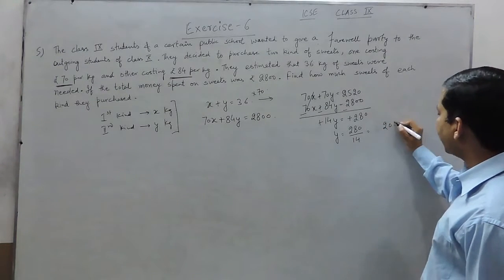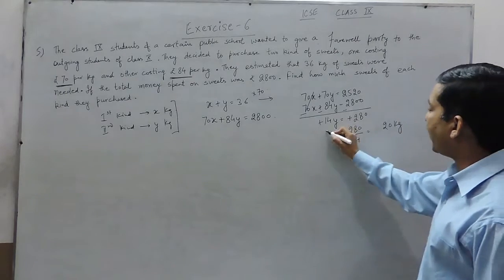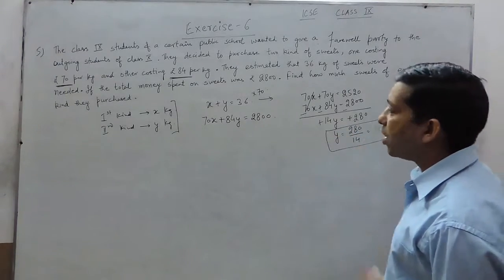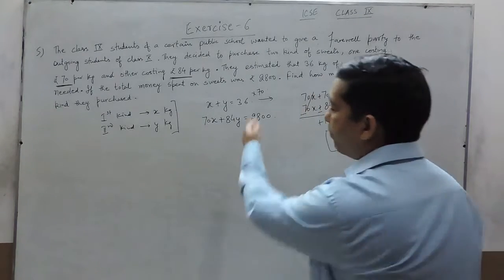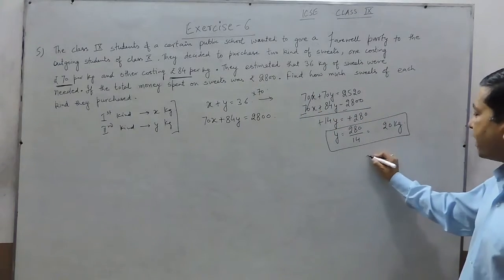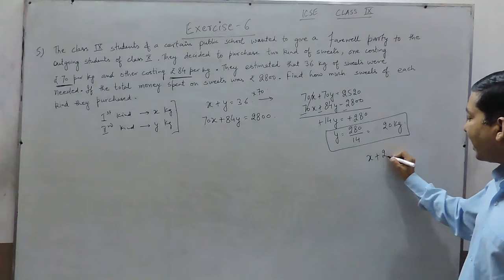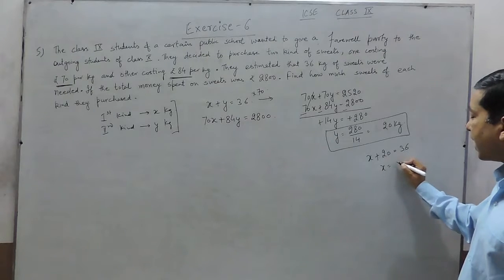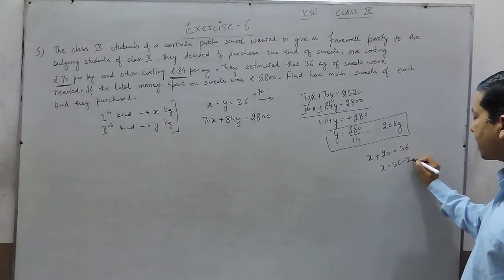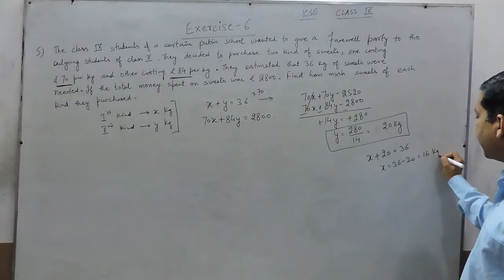Sorry, 20 kgs. So, the quantity of second kind of sweets is 20 kgs. If we put it in the first equation, then the first kind of sweets plus 20 kgs equals 36 kgs. So, the first kind of sweets will be 36 minus 20 and that is 16 kgs.